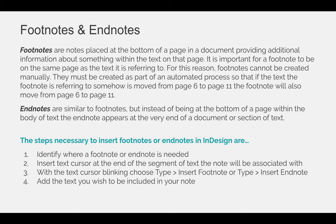The steps to insert footnotes or endnotes are the same. First, identify where a footnote or endnote is needed. Insert the text cursor at the end of the segment of text the note will be associated with. With the text cursor blinking, choose the Type menu, then Insert Footnote or Insert Endnote, and then add the text you wish to include in your note.